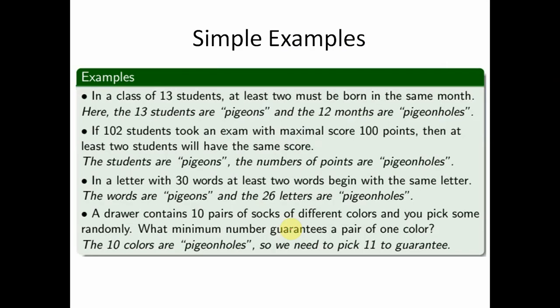Let us see some simple examples. In a class of 13 students, at least two must be born in the same month. Here, the 13 students are the pigeons and the 12 months are the pigeon holes. Once I cover 12 students across 12 different months, the 13th student's birthday is bound to fall in a month already used.